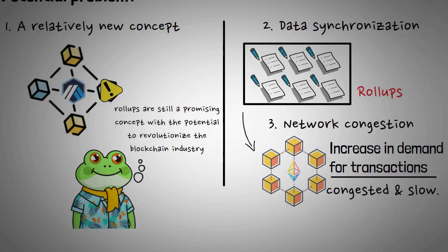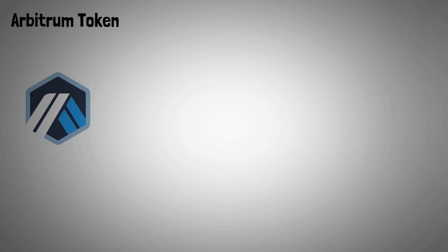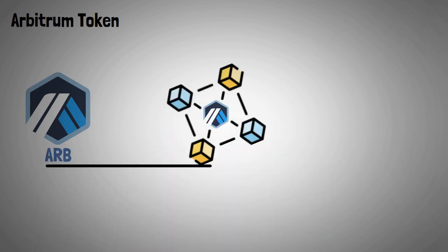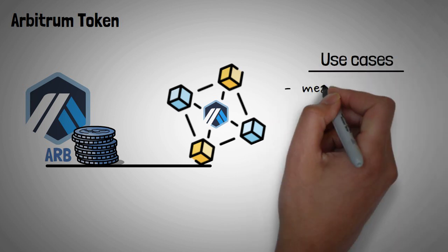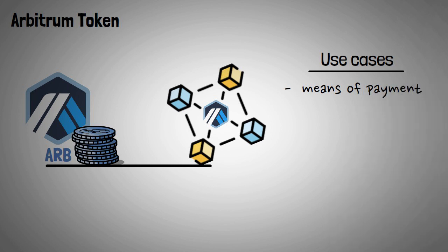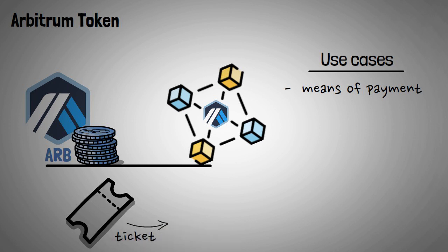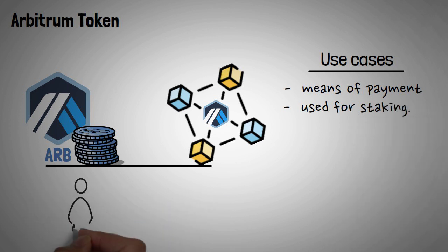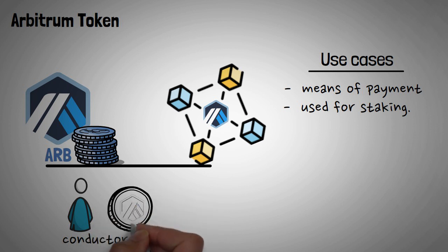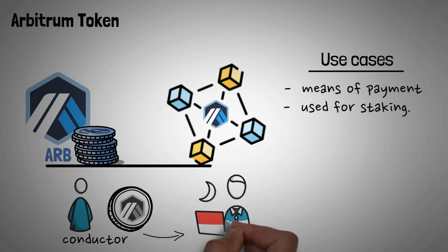Before we round up, let's take a quick look at the Arbitrum token — the native token of the Arbitrum network. It's like the currency that powers the engine of the Arbitrum train; without it, the train can't go anywhere. One primary use case is as payment for using the Arbitrum network, like buying a ticket to ride the train. The Arbitrum token can also be used for staking — stakers help keep the network running smoothly and earn rewards, but they need to hold a certain amount of Arbitrum tokens to participate.